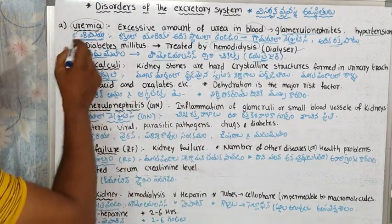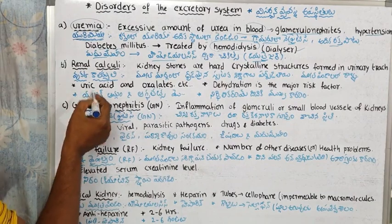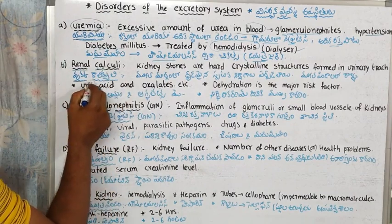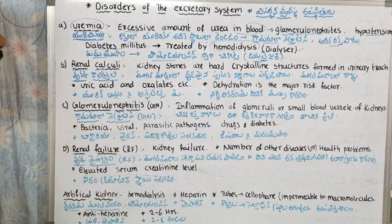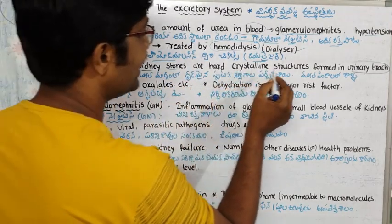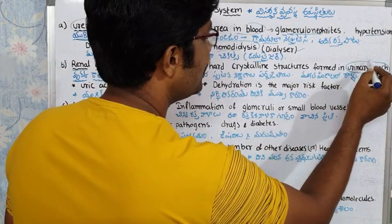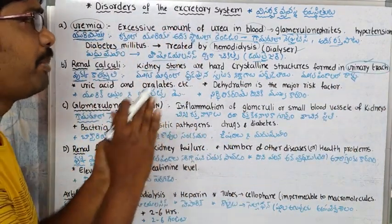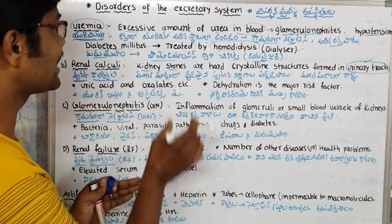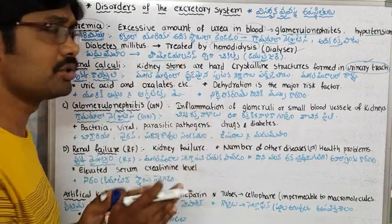The second condition is renal calculi — also called kidney stones. These are hard crystalline structures formed in the urinary tract, where crystals and stones form. They are also known as kidney stones.